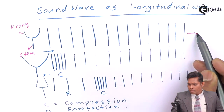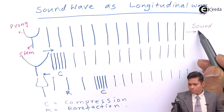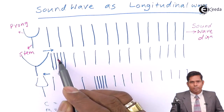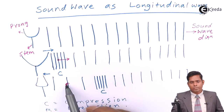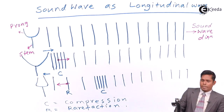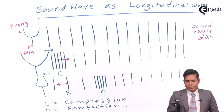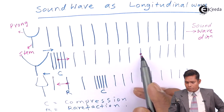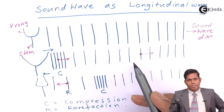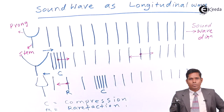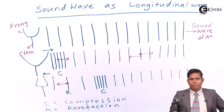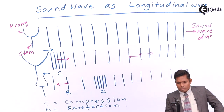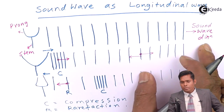The sound wave is traveling in this direction. The particle at compression will move forward, and the particle at rarefaction will move backward. If you focus on any one layer or molecule, when compression reaches it, the particle moves forward; when rarefaction reaches it, the particle moves backward. So the particle continuously alternates between moving forward and backward. Therefore, the sound wave is called a longitudinal wave because particle oscillation is parallel to the direction of sound wave propagation.